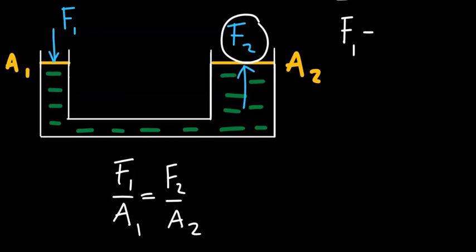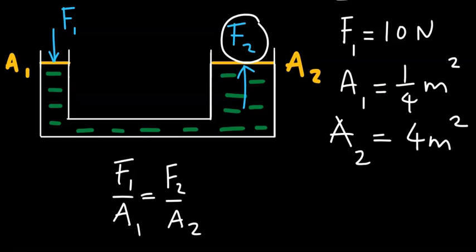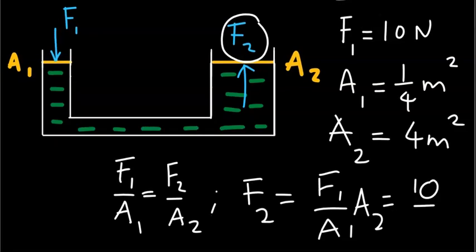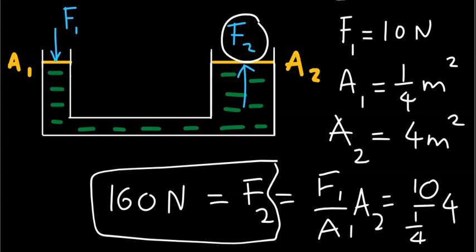Let's assume F1 is 10 N, the surface area of piston 1 is a quarter meter squared, and the surface area of the second piston is 4 meters squared. So what is F2? F2 equals F1 over A1 times A2, giving a value of 160 N. This example shows that Pascal's Law can be used in a hydraulic arrangement to magnify a force — one such example is the hydraulic lever.